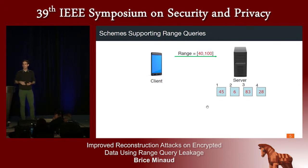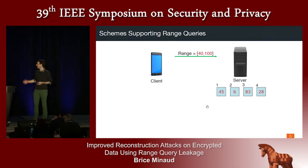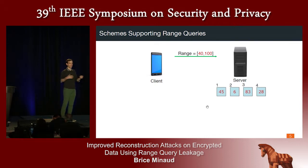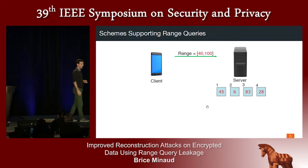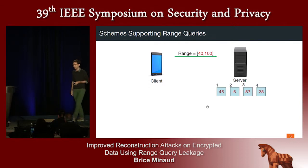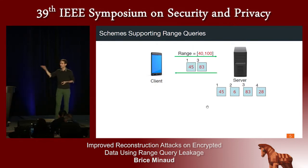Today I specifically want to talk about range queries. Beyond point queries — where you fetch a record matching a fixed value — the most basic query you might want to handle in a database management system is a range query. In the example shown on this slide, the server has four records and we focus on one value per record, essentially one column in the database. The client issues a query to fetch all records whose value is between 40 and 100, and the server returns the first and third records whose value is within that range.